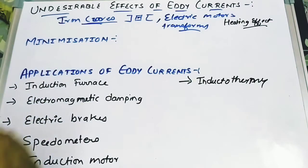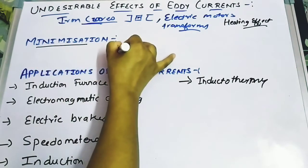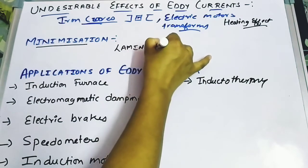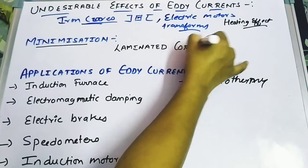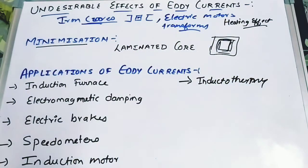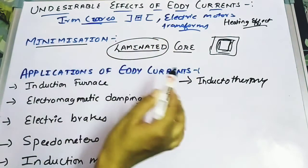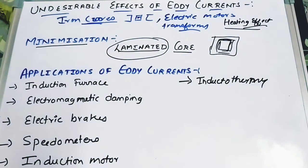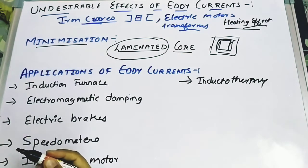We can minimize eddy currents by using a laminated core. The armature is of rectangular shape with a number of windings. By using an insulating material — laminated layers — we can separate the core sections. This laminated core reduces the heating effect and losses in transformer cores, electric motors, and generator cores, minimizing heat loss.